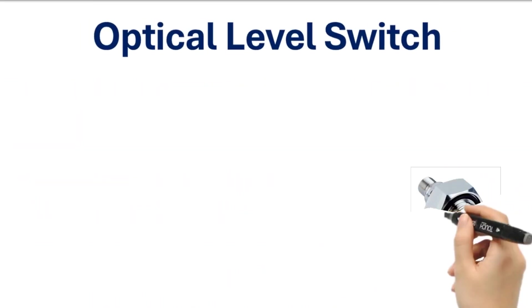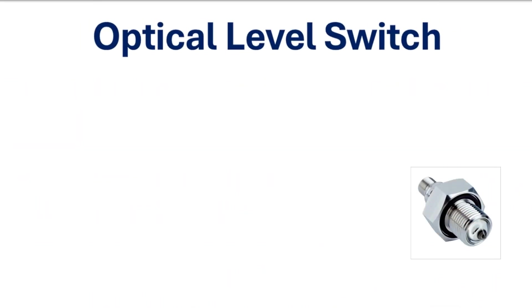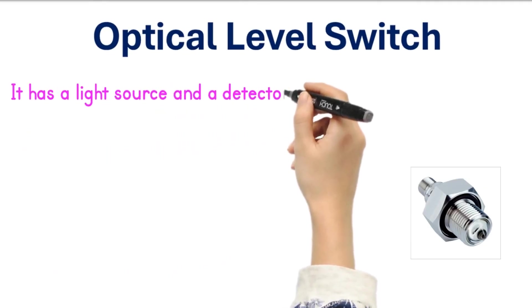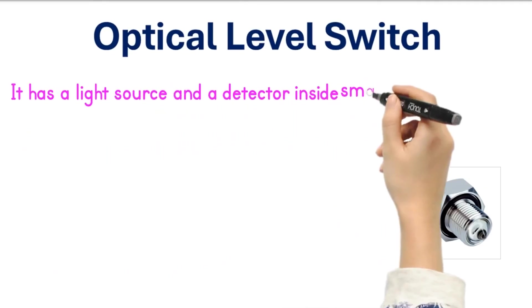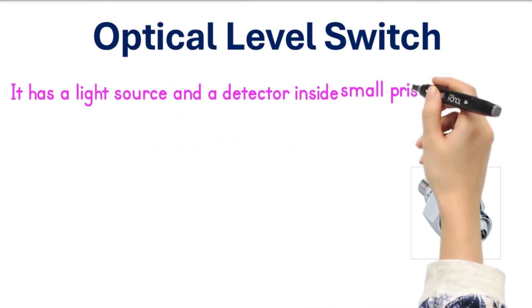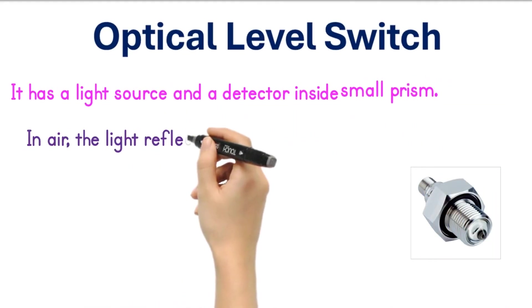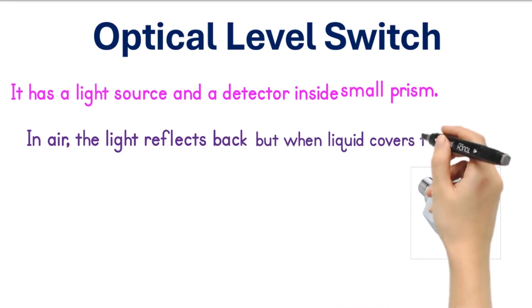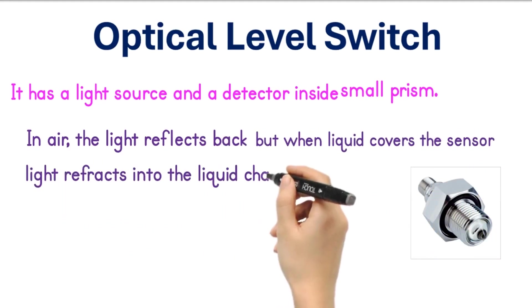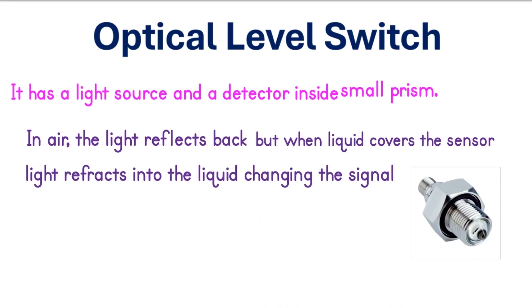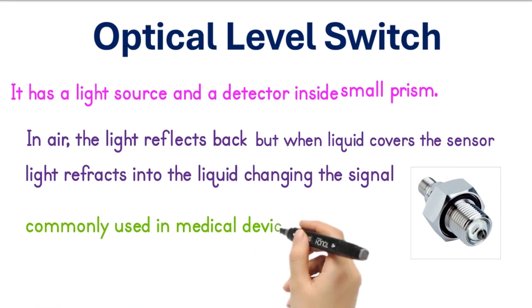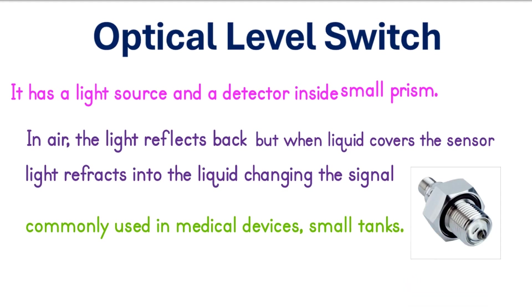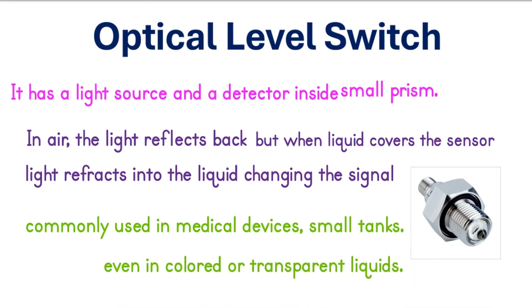Optical level switch. It has a light source and a detector inside a small prism. In air, the light reflects back, but when liquid covers the sensor, the light refracts into the liquid, changing the signal. These are compact and commonly used in medical devices, small tanks, and even in colored or transparent liquids.